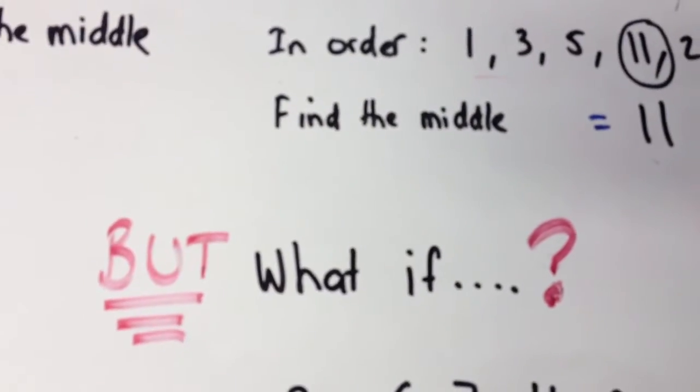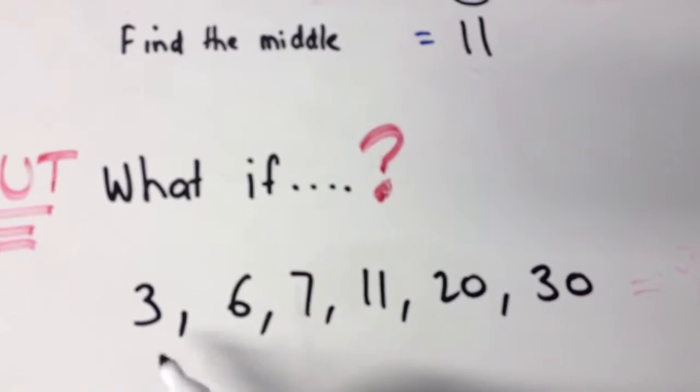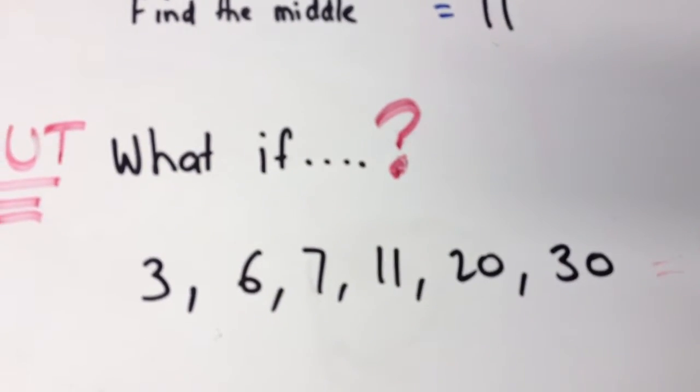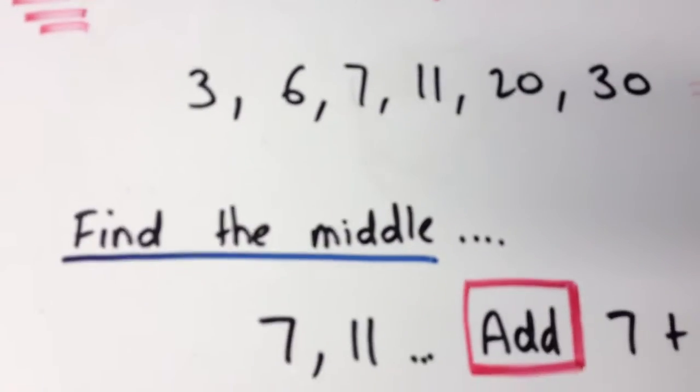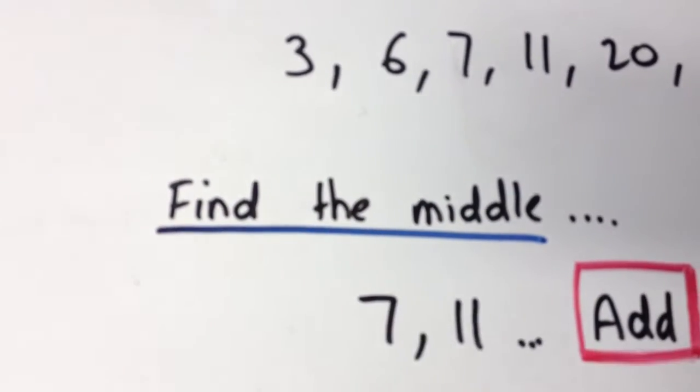But what if, I hear you ask, you get a set of numbers that looks like this: 3, 6, 7, 11, 20, and 30. You've put them in order, but when you go to find the middle, you find that the middle is actually between 7 and 11. So what do we do?